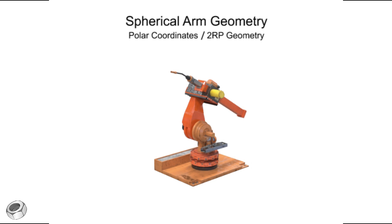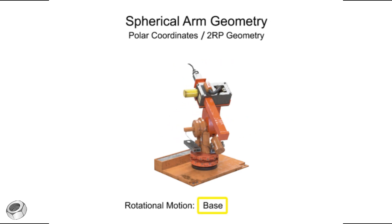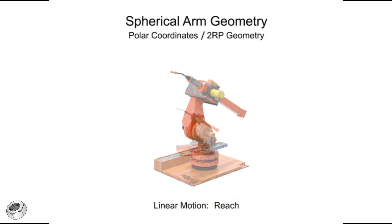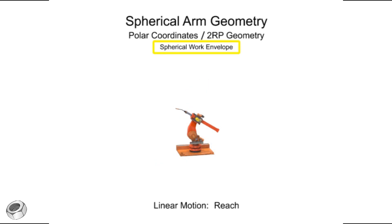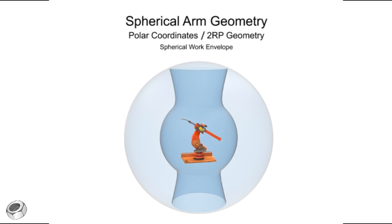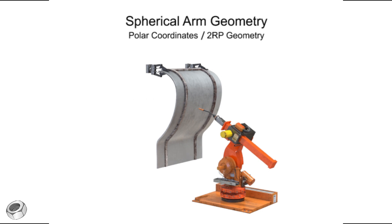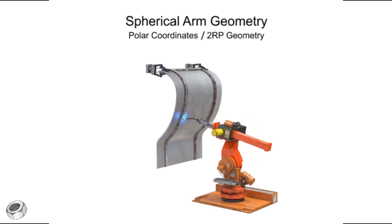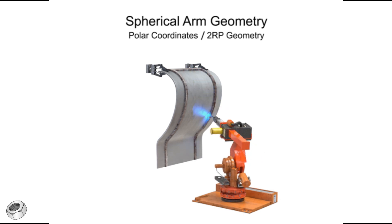Robotic arms with spherical geometry have rotational movement in two directions — rotational movement at the base and rotational movement at the shoulder — as well as linear motion in one direction, typically the reach of the arm. Spherical arm geometry robots have a mostly spherical work envelope at their outer reach, but are limited by the linear reach of the arm and the rotation of the shoulder joint. The shape of the robot's inner work envelope is almost conical and does not become a sphere until the arm extends. Spherical arm geometry robots typically have a very long reach and have proven their performance in industrial applications. However, their high cost, large use of floor space, and lack of flexibility compared to jointed spherical arm robots make it hard to justify in most industrial applications.